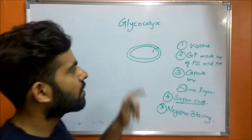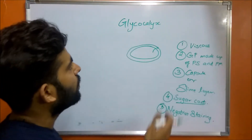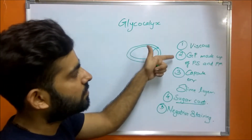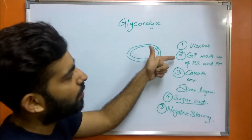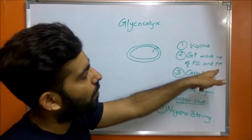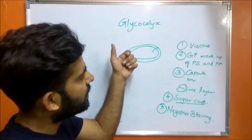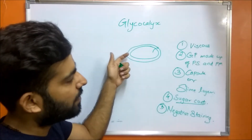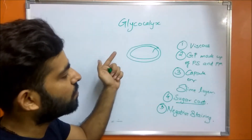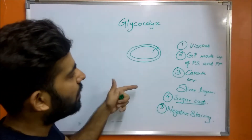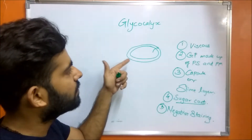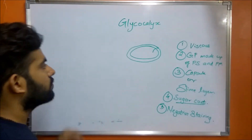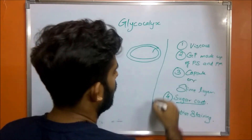So to summarize the properties: glycocalyx is a viscous gelatinous polymer made up of polysaccharide and polypeptide. If it is firmly attached it is called a capsule, and if it is not firmly attached it is known as a slime layer. It is also known as a sugar coat, and to detect its presence you must perform negative staining.